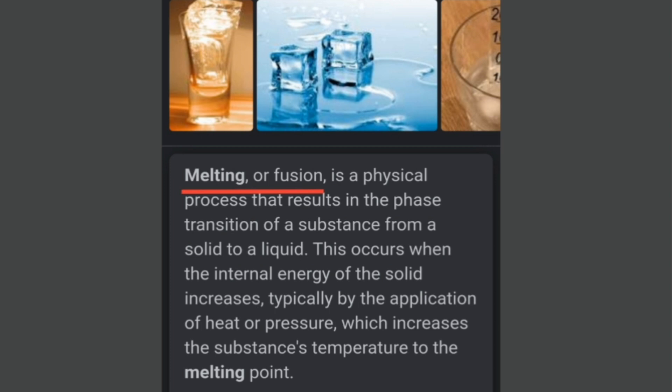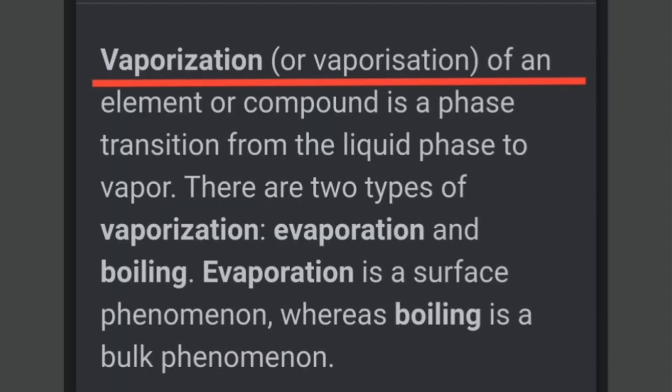So what is melting point? Melting point is the temperature at which a solid changes into a liquid phase. Now, vaporization is the phase transition from the liquid phase to the gaseous state. There are two types of vaporization: evaporation and boiling.